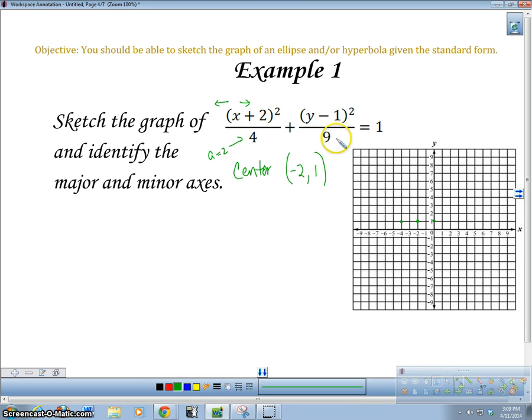This one is 9. So you probably guessed this. b is going to be 3 because 3 squared is 9. So I'm going to go up and down 3 units. So 1, 2, 3. 1, 2, 3. And then I'm going to draw my ellipse. Notice that it looks like an oval.